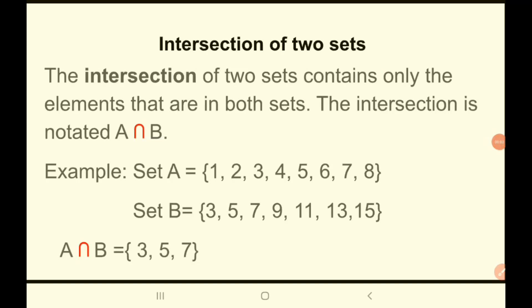Now we move to the intersection of two sets. When something intersects, it means they join. The intersection of two sets contains only the elements that are in both sets. The intersection is noted by a symbol similar to the letter N. We have two sets, A and B, and that symbol is used to represent their intersection.